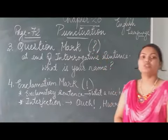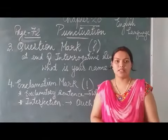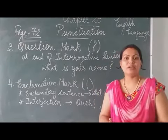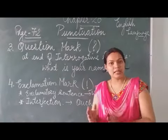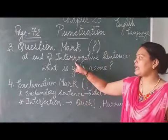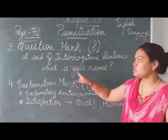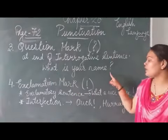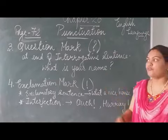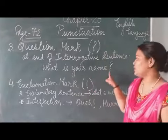So when do we use a question mark? In an interrogative sentence — at the end of an interrogative sentence. Whenever we are asking a question, our sentence becomes a question, so at the end we use a question mark. For example, 'What is your name?' This is your interrogative sentence, so at the end we use a question mark. Whenever we are asking a question, it is an interrogative sentence, and then we use a question mark.